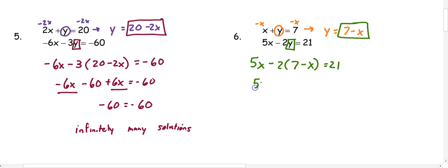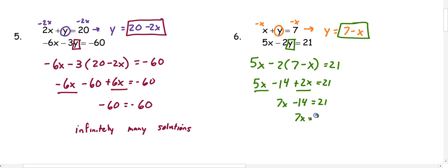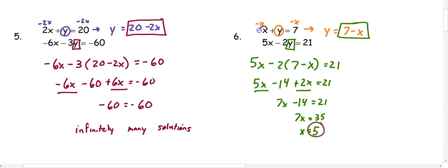In order to solve, I distribute: 5x minus 14 plus 2x equals 21. Combining x like terms gives 7x minus 14 equals 21. Adding 14 to both sides gives 7x equals 35, and dividing by 7 gives x equals 5. Once I know x is 5, I substitute back into the first equation: 5 plus y equals 7. Subtracting 5 from both sides gives y equals 2. So the final answer is the ordered pair 5, 2.